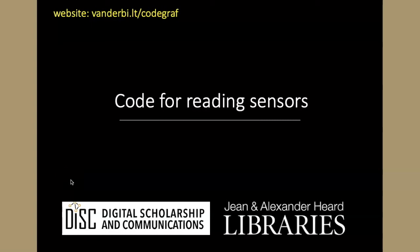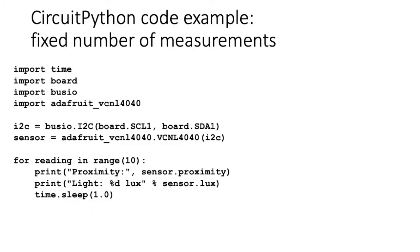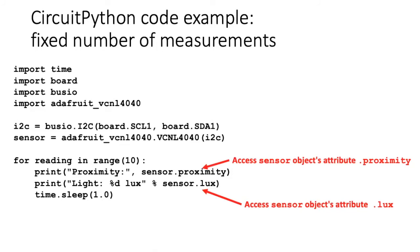Once we've imported the modules necessary for our sensors and created the objects we're going to use to communicate with the sensors, we need to write the actual code itself. We'll step through this code example, which takes a fixed number of measurements — 10 — from the sensor. Once I've created the sensor object, I can access its attributes. Since it's a proximity and light measuring sensor, I can get the proximity number using sensor.proximity and the light intensity using sensor.lux.